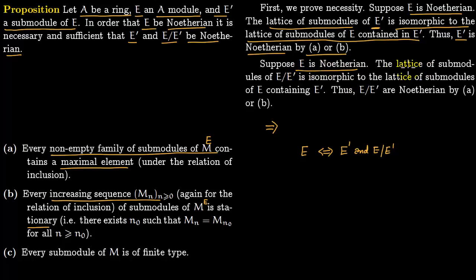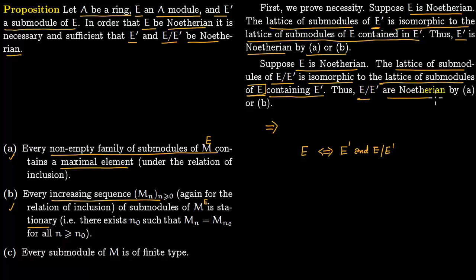Similarly, since E is Noetherian, the lattice of submodules of E over E prime is isomorphic to the lattice of submodules of E containing E prime. This lattice of submodules of E satisfies condition A or B because E is Noetherian, so therefore E over E prime is Noetherian by A or B.